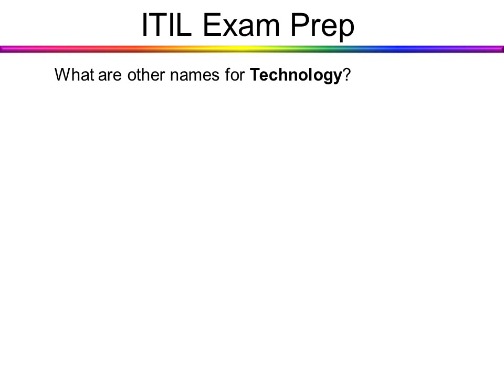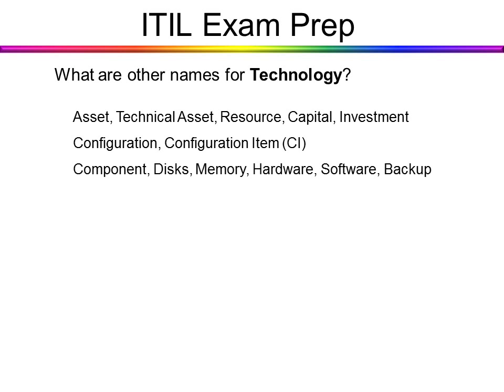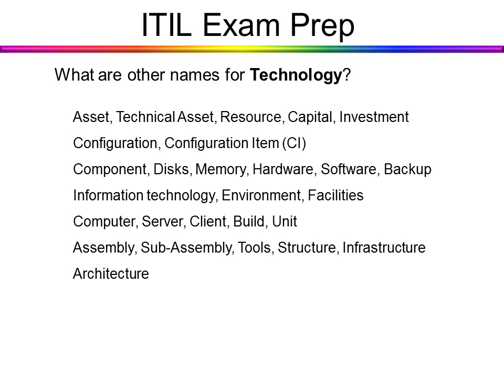What are other names for technology? This is a really important concept because exam questions cannot use the same words in both question and answer. Other names for technology might be: asset, technical asset, resource, capital, investment, configuration or configuration item, component, disks, memory, hardware or HW, software or SW, backup, information technology, environment, facilities, computer, server, client, build, unit, assembly, sub-assembly, tools, structure, infrastructure, and architecture. You don't need to memorize these — just know that any of these could mean technology.